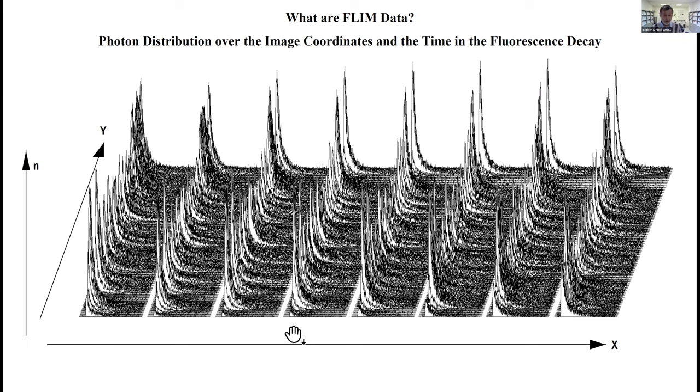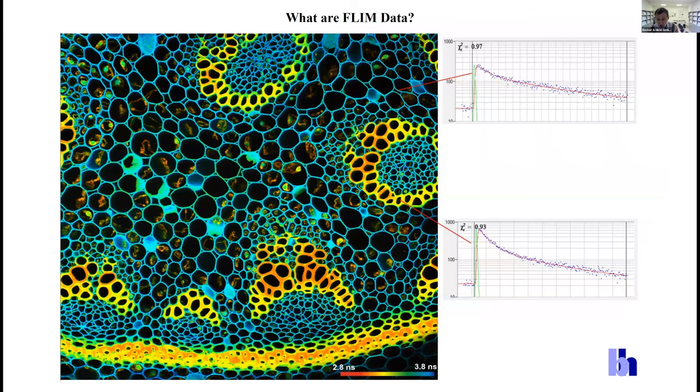All the peaks you see here are actually fluorescence decay functions in the individual pixels. The task of the FLIM software is to convert this ugly photon distribution into a beautiful image. We have it here. The FLIM image represents the image of the sample in a false color representation where the color represents the fluorescence lifetime.